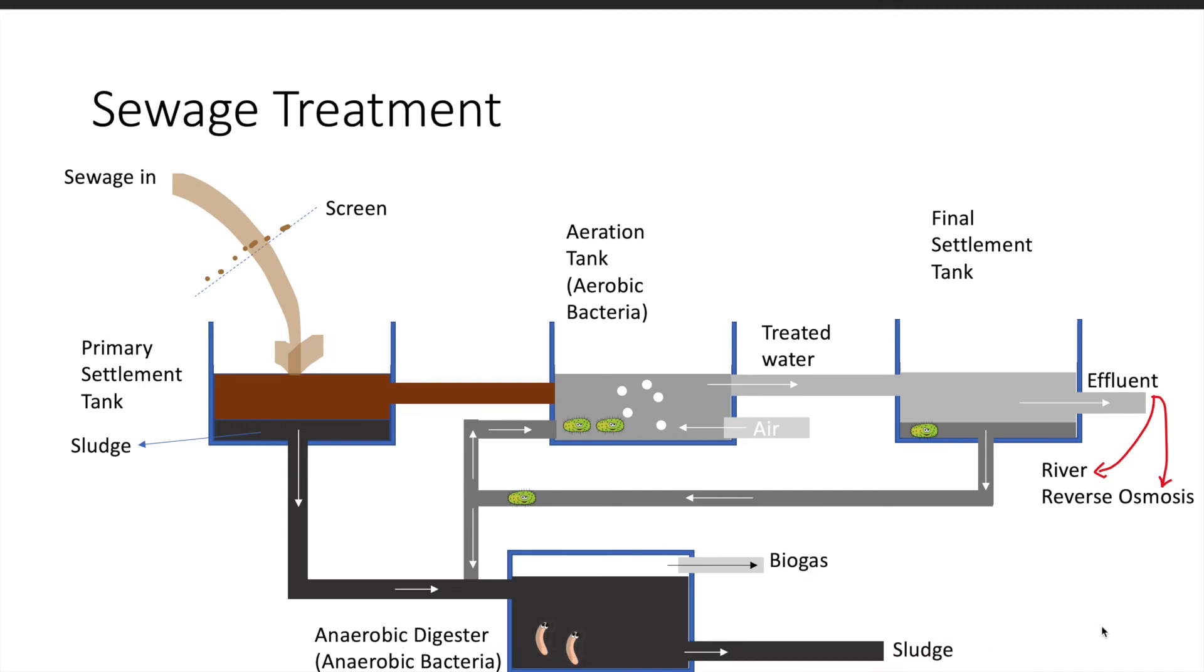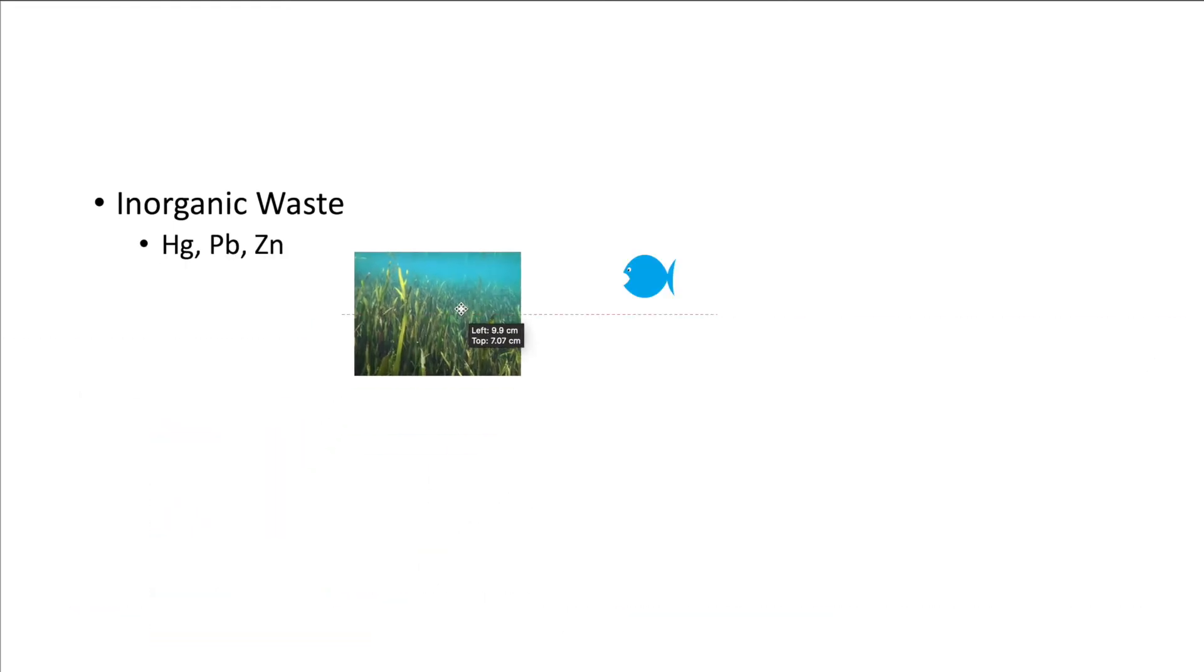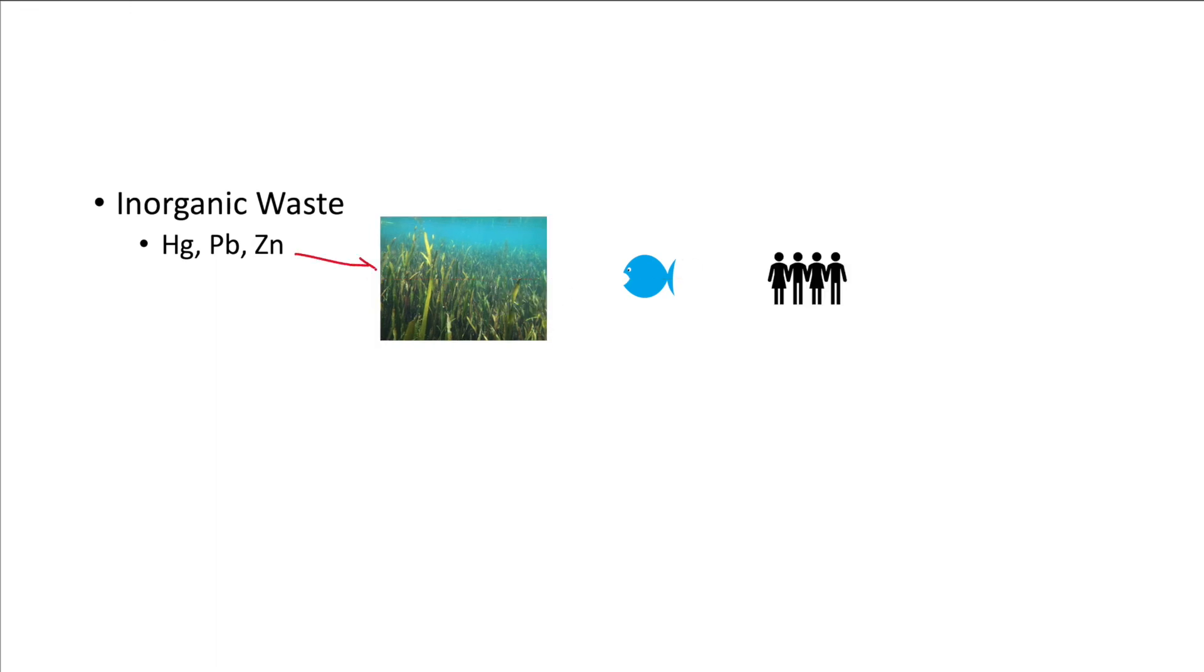So next we go on to inorganic waste. They can be released into the environment by industries containing poisonous metals like these and these are absorbed by the plants. The fish will consume the plants, the fish will be caught and whoever consumes them will be poisoned.